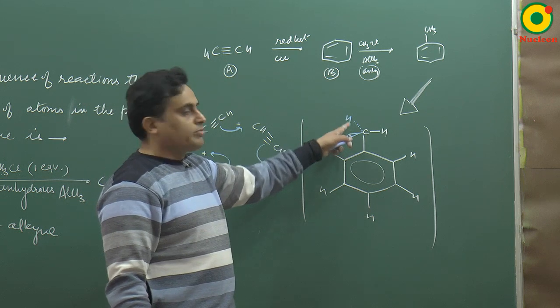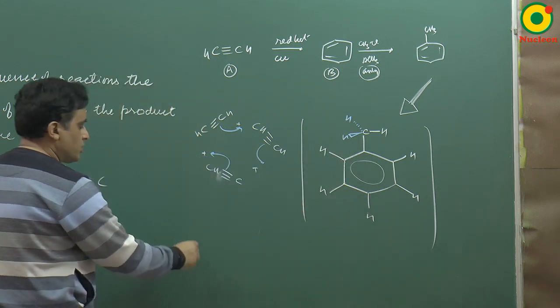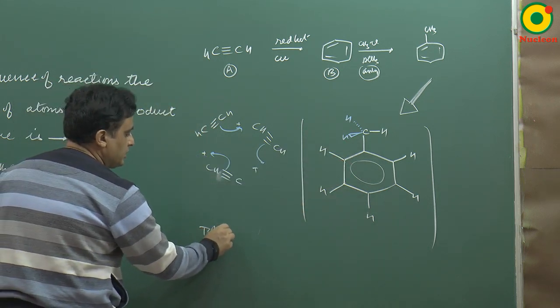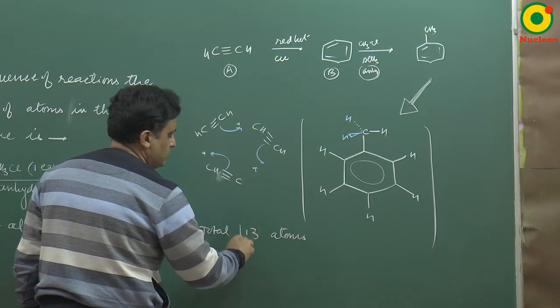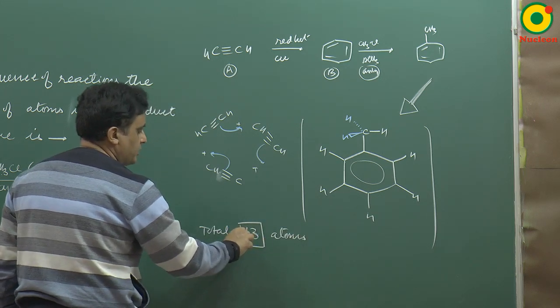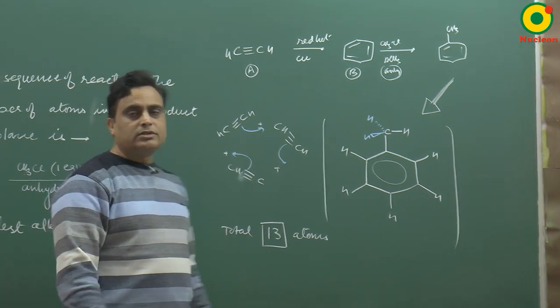Two hydrogens are out of plane, so total 13 atoms are in one plane. So this answer will be 13. One, three. Note.